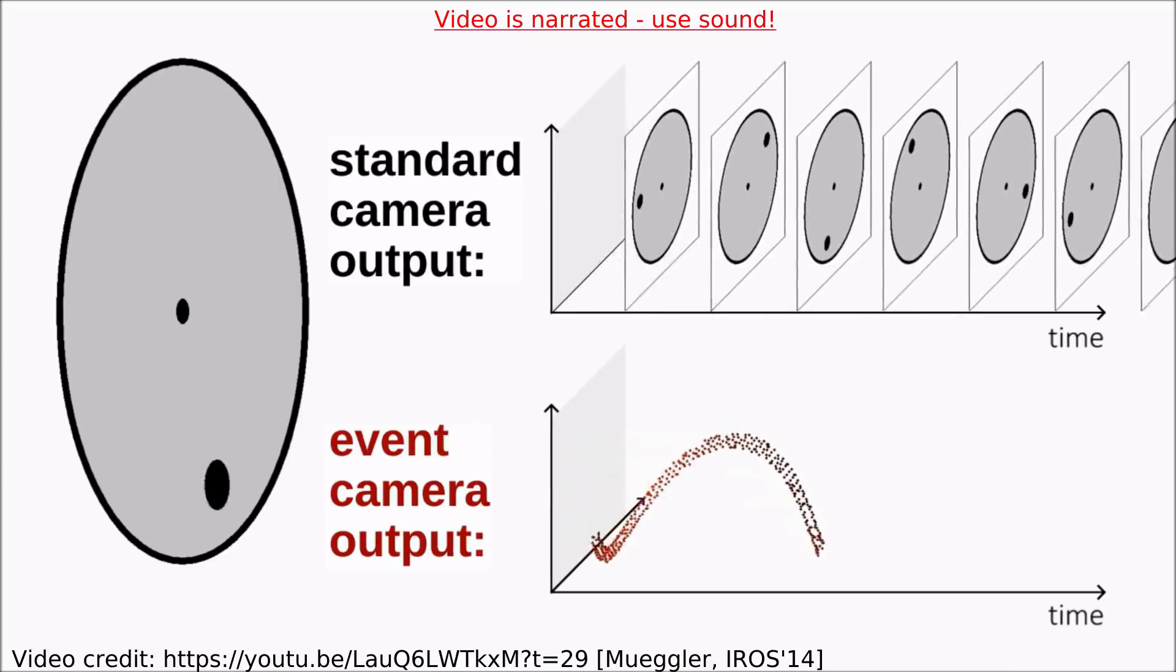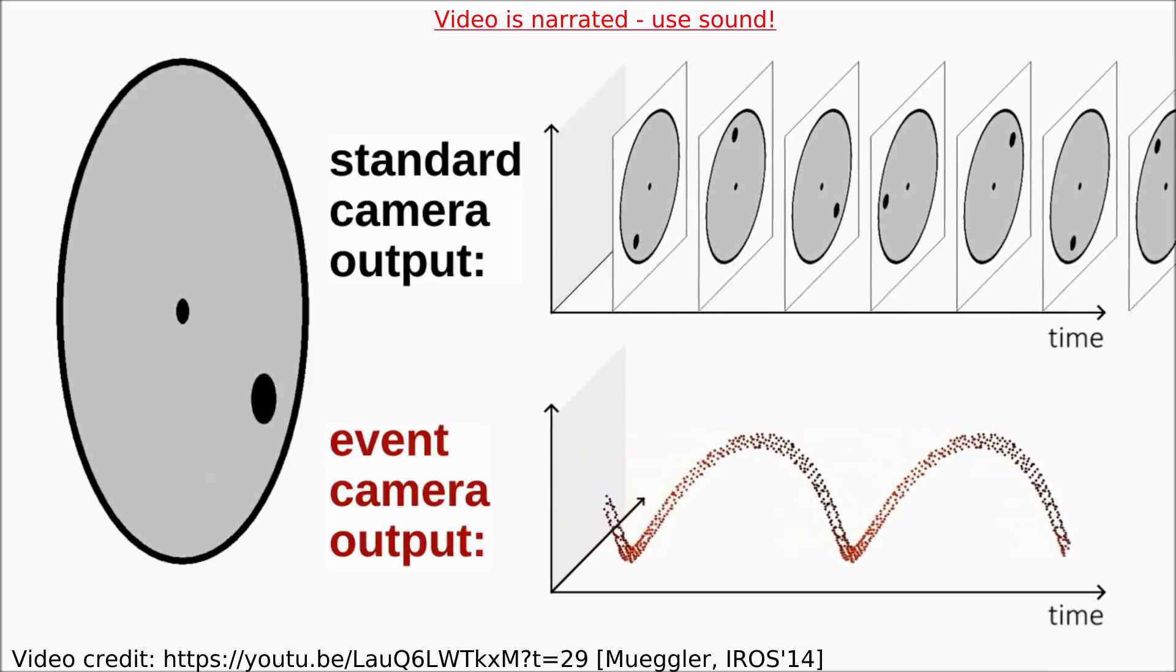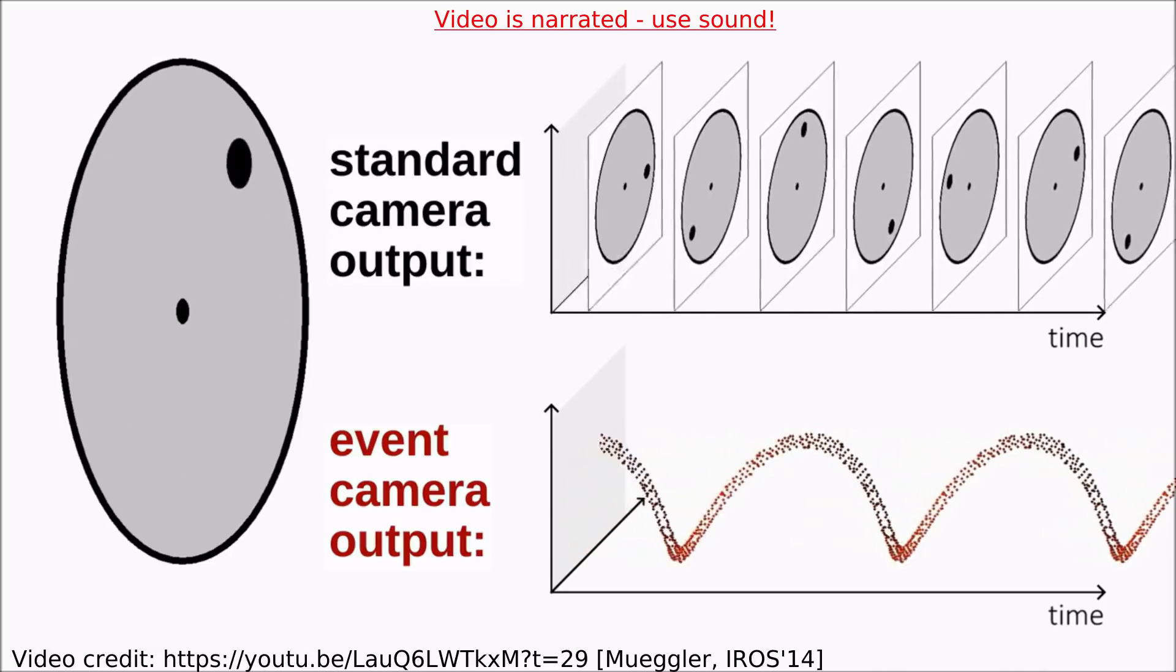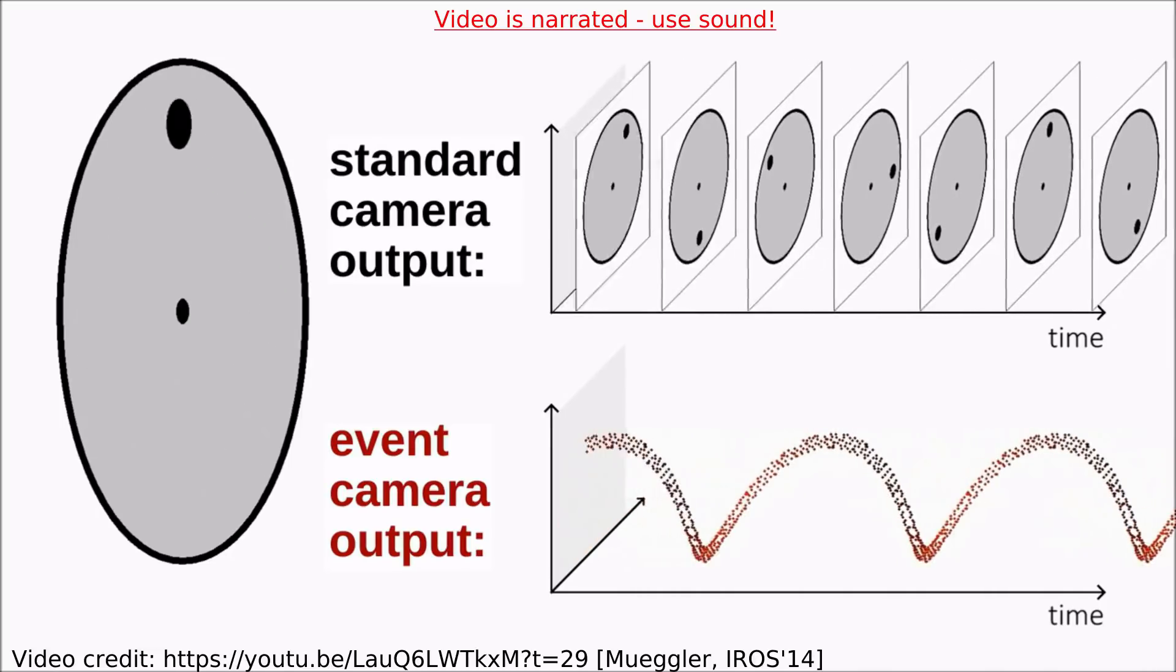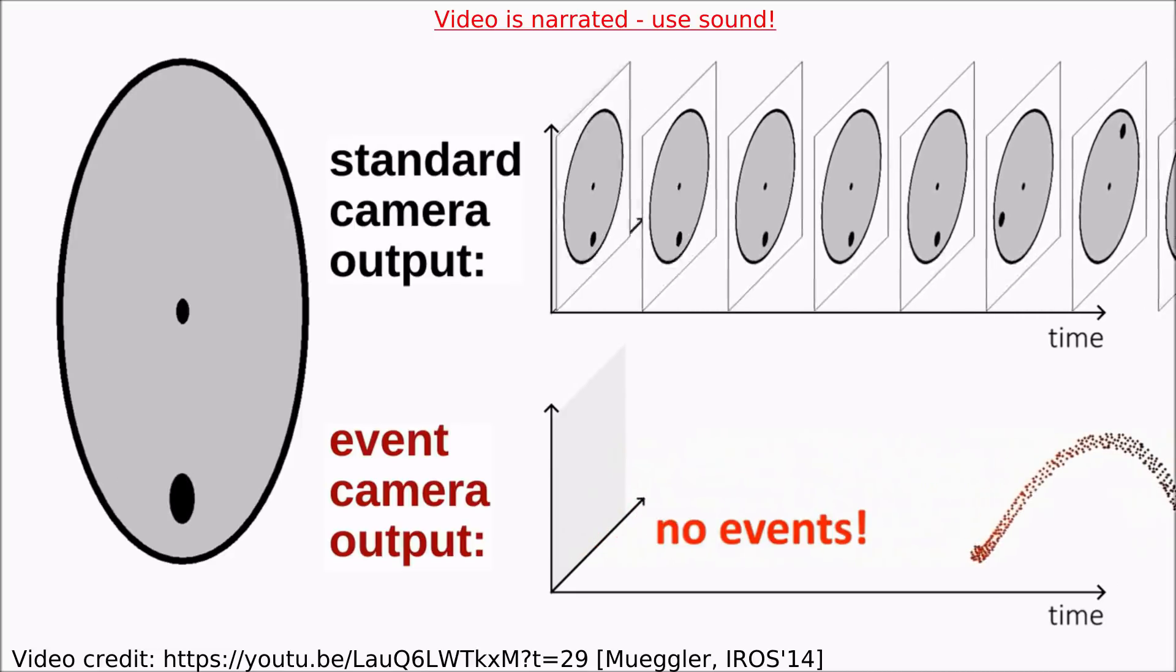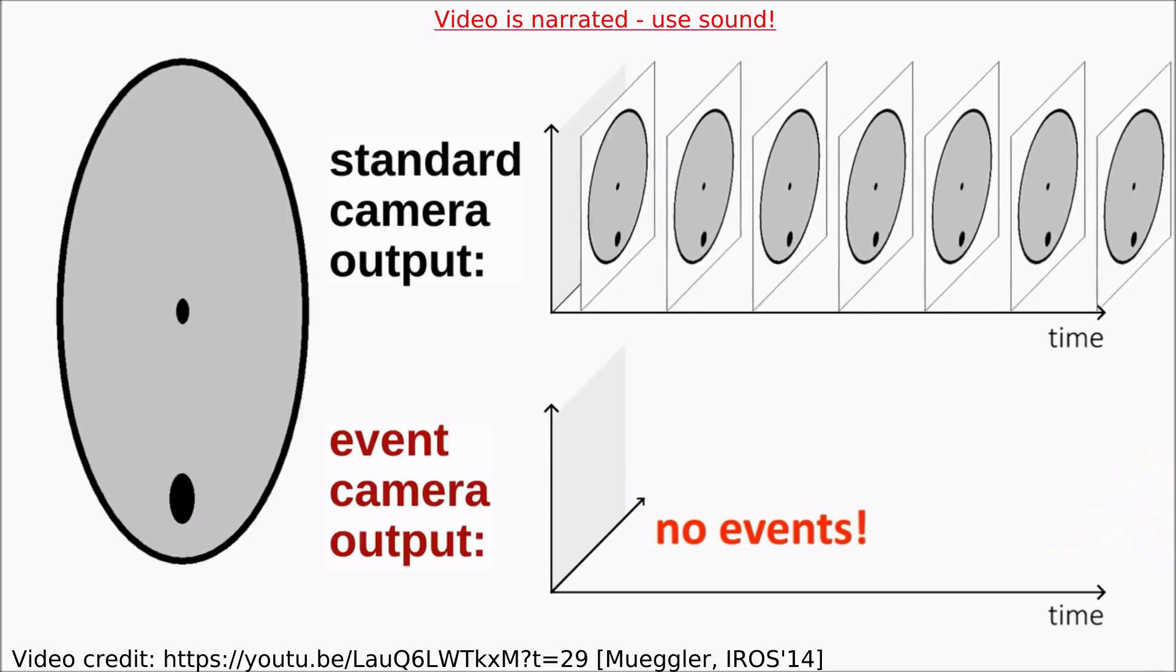Event cameras are novel bio-inspired visual sensors in which each pixel operates independently and asynchronously. Instead of producing frames, pixels in an event camera keep track of their brightness. When this goes over or below a certain threshold, they trigger an event.